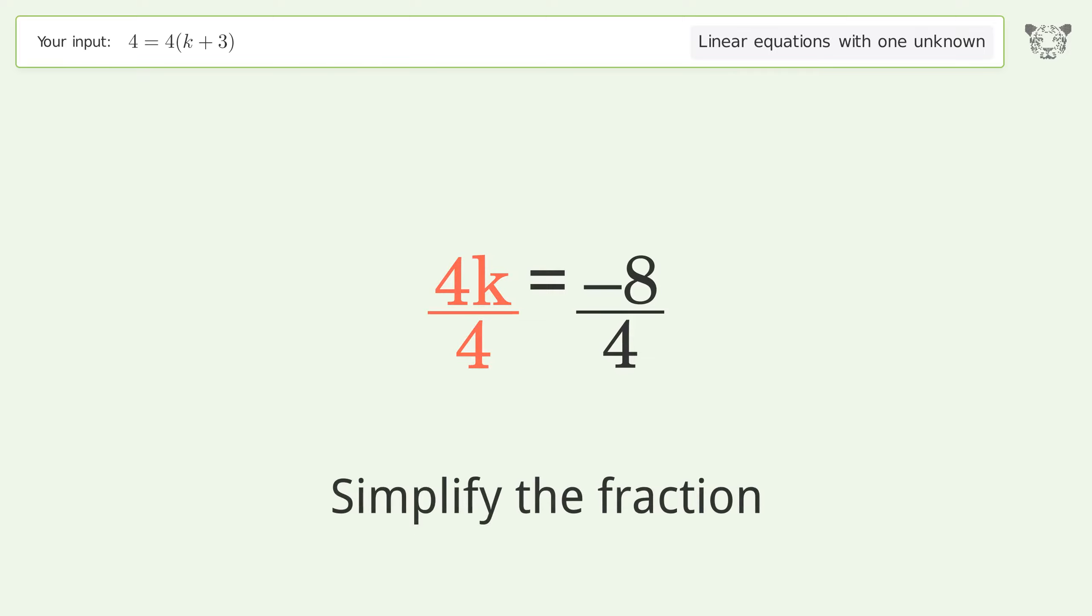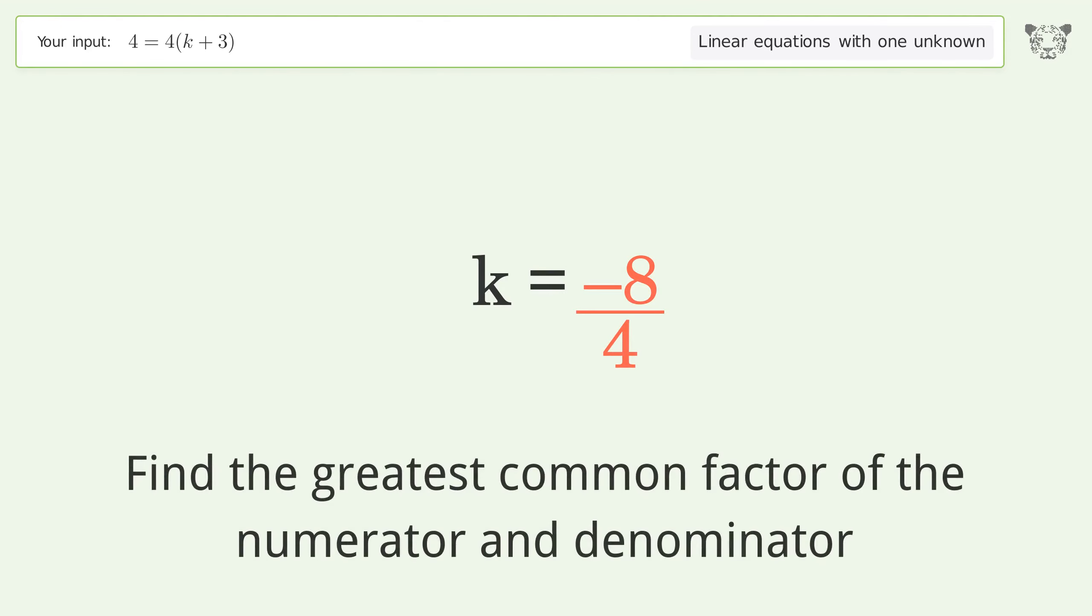Isolate the k. Divide both sides by 4. Simplify the fraction.